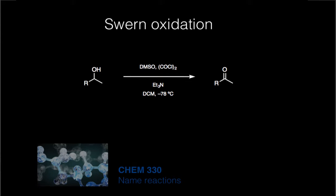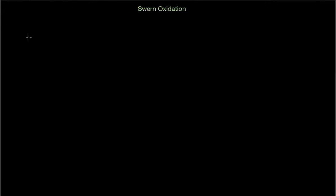Okay, so let's talk about the Swern oxidation mechanism. This is a classical reaction that allows you to oxidize an alcohol into the equivalent carbonyl. The reaction conditions for this reaction are you use DMSO, you use oxalyl chloride.